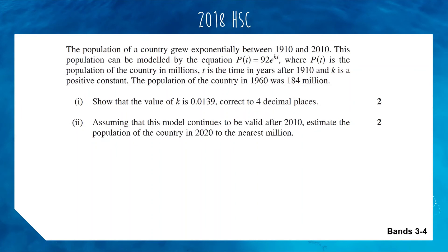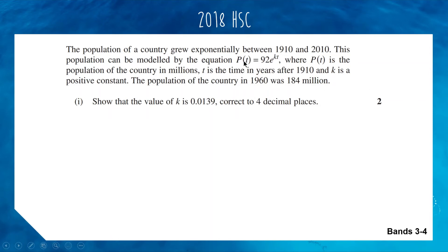Up next we have the 2018 HSC question with 4 marks covering from band 3 to band 4. We have a population of a country growing exponentially between 1910 and 2010. Population modeled by the equation P equals 92 e to the kt. P is population, t is time, k is a constant which we're going to figure out. The population in 1960 was 184 million. Show that the value of k is 0.0139 correct to 4 decimal places.